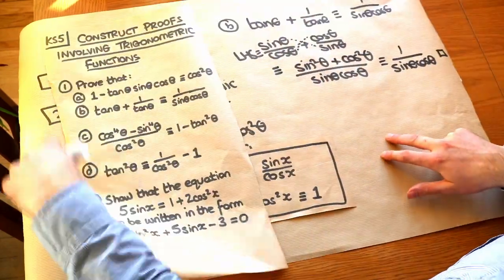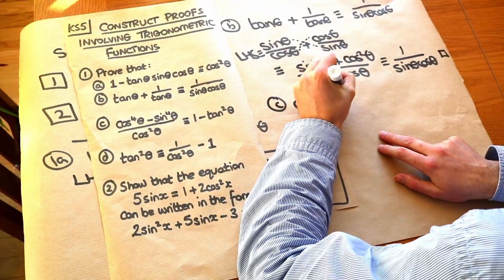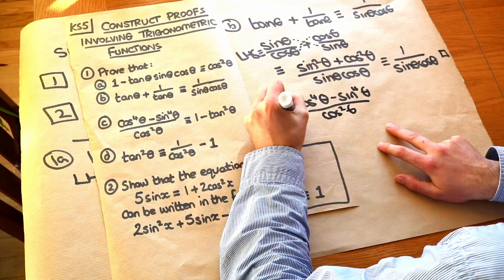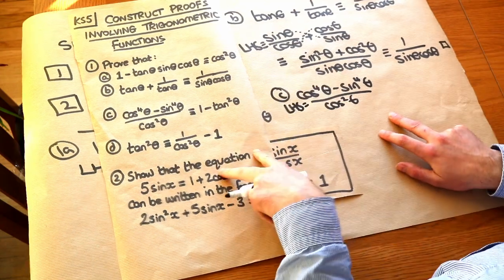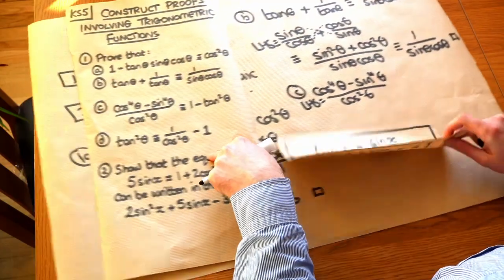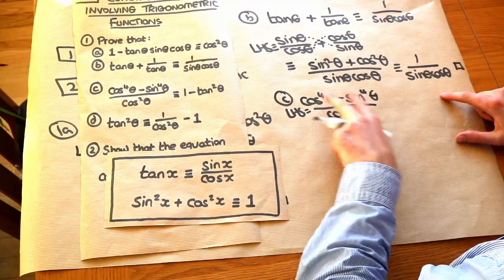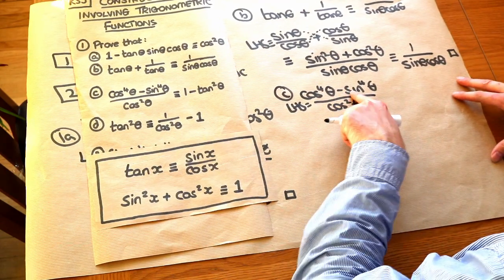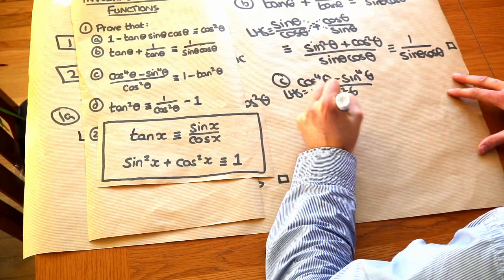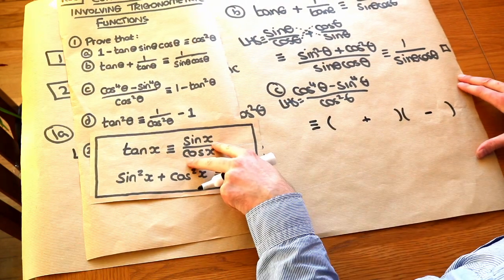Next question: we've got cos to the power of 4 theta minus sine to the power of 4 theta, all over cos squared theta, and we want to show it equals 1 minus tan squared theta. Notice this numerator is just a difference of two squares — something squared minus something squared. We know how to factorise that: two brackets, one with a plus in the middle and one with a minus in the middle.